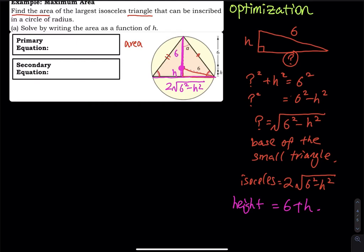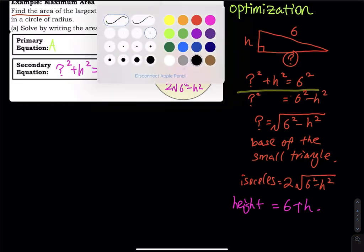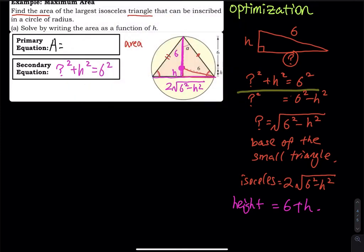The secondary equation is: that half-base squared plus H squared equals six squared. The primary equation is area equals base times height divided by two, which is one half times two times the square root of six squared minus H squared, times six plus H. That is a lot of work — let's start the derivative.